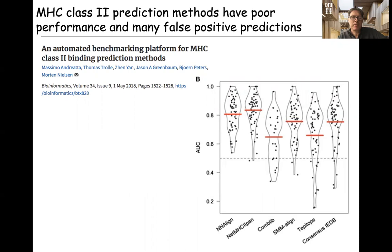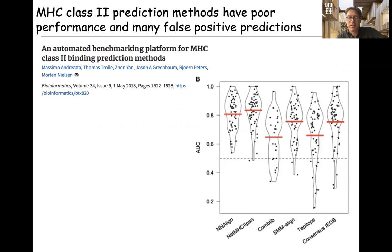Historically, MHC class II binding prediction algorithms have had a poor reputation of being over-predictive, achieving many false positive predictions. This is illustrated here in this benchmark figure from a few years back, where a series of publicly available methods were benchmarked against independent data, showing that even the best methods have a performance AUC around 0.8, much lower than MHC class I binding prediction algorithms, where performance values are in the range 0.9 to 0.95.